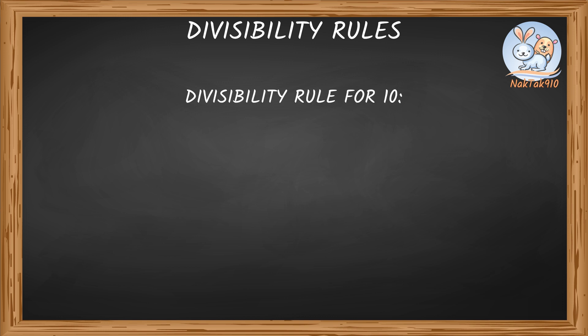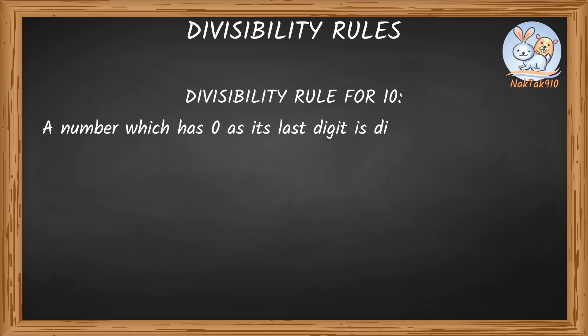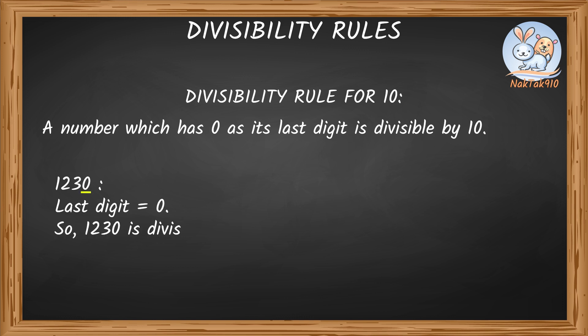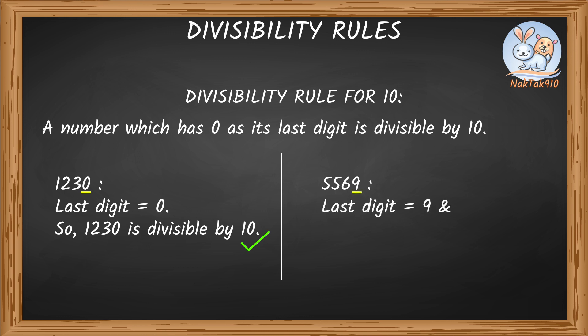Divisibility rule for 10: a number which has 0 as its last digit is divisible by 10. For 1,230 — the last digit is 0, so 1,230 is divisible by 10. For 5,569 — this number ends with 9, not 0, so it is not divisible by 10.